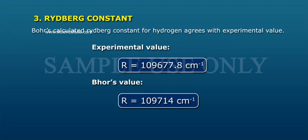3. Rydberg constant. Bohr's calculated Rydberg constant for hydrogen agrees with experimental value. Experimental value R is equal to 109677.8 cm to the power of minus 1.